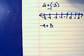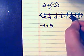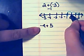My second example is negative four plus five. I'm always going to start at zero. The negative four tells me to move four to the left.